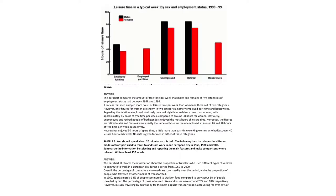The chart below shows the amount of leisure time enjoyed by men and women of different employment status. Write a report for a university lecturer describing the information shown below. The bar chart compares the amount of free time per week that males and females of five categories of employment status had between 1998 and 1999. It is clear that men enjoyed more hours of leisure time per week than women in three out of five categories. However, only figures for women are shown in two categories, namely employed part-time and housewives.